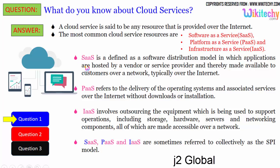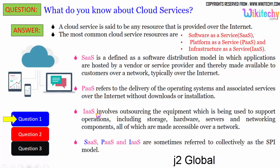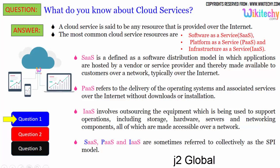If you are getting software as a rental, that is Software as a Service. Getting an operating system via the internet is Platform as a Service, and if it is a server, that is Infrastructure as a Service. Software as a Service is defined as the software distribution model in which applications are hosted by a vendor or service provider and made available to customers over a network, typically over the internet.